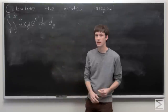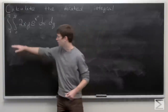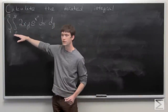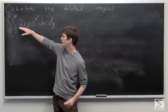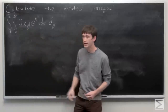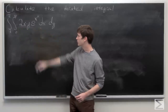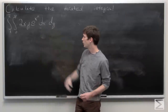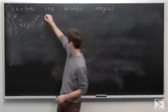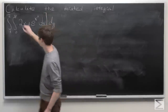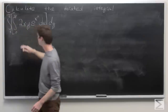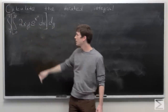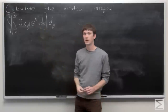In this problem, we're asked to calculate the iterated integral. The double integral is from 1 to 2 and then 0 to y. Our function that we're integrating is 2xy times e to the x squared, and we're integrating first with respect to x and then y. We can section off our integrals — first we evaluate the integral from 0 to y of our function with respect to x.